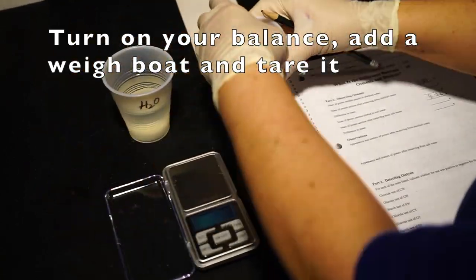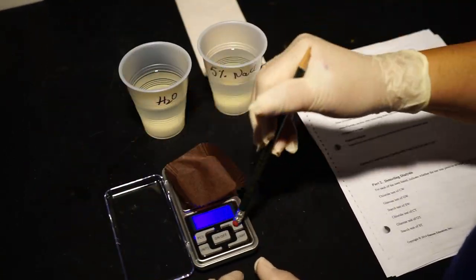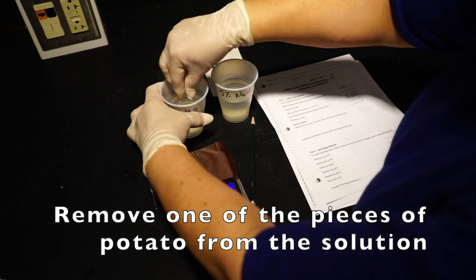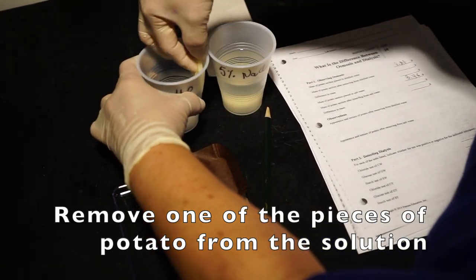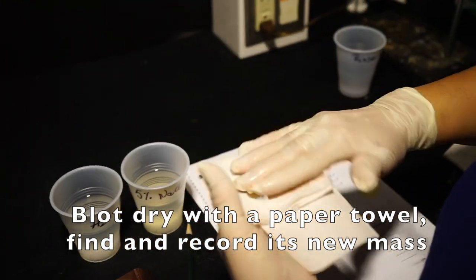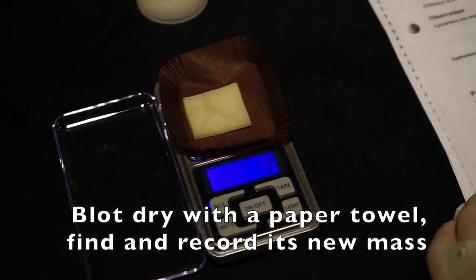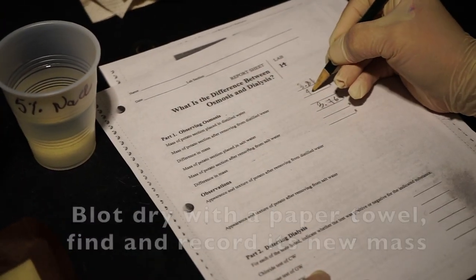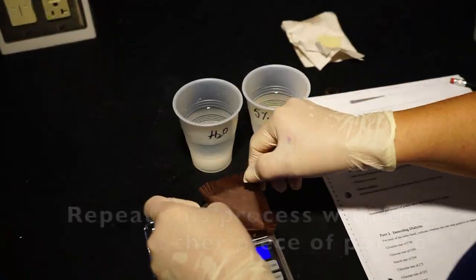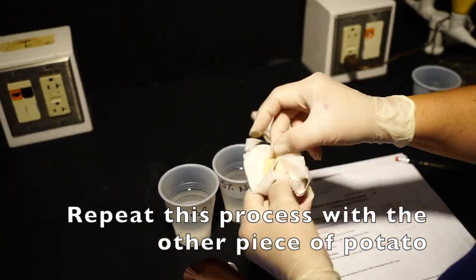Once the time is up, turn your balance on and place a weigh boat on the scale and tare it. Remove one of the pieces of potato from the solution. Blot it dry with a paper towel and place it on a weigh boat and take the mass. Record it in your datasheet. Repeat this process with the other piece of potato.